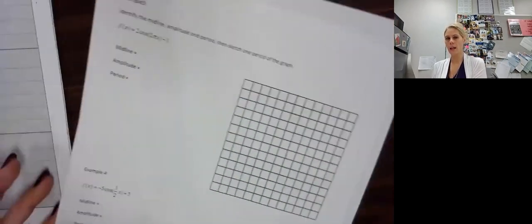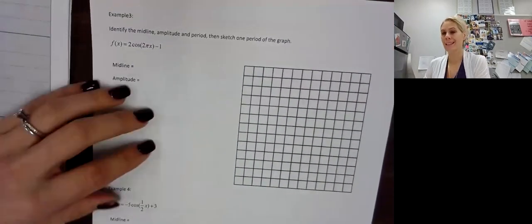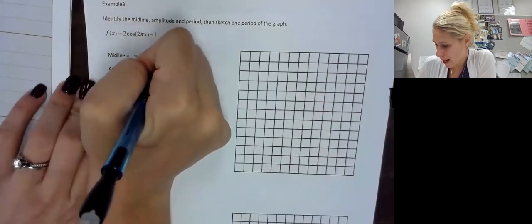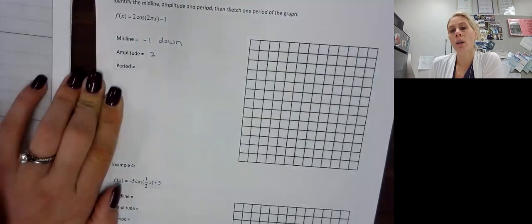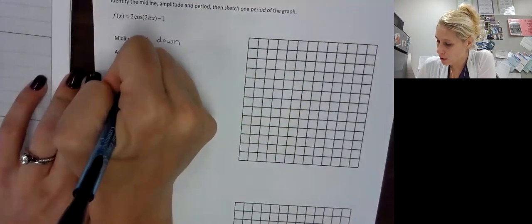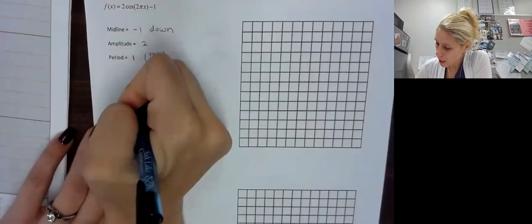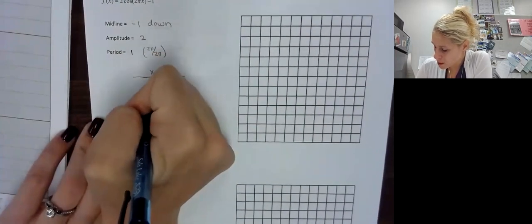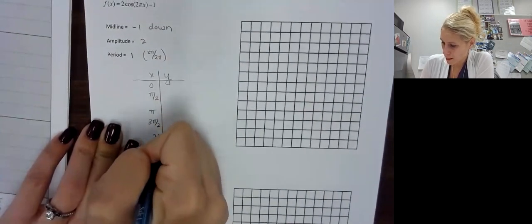Now let's look at some cosine graphs on the last page. If you go to examples 1 and 2, you'll find these are the same functions but now with cosine instead of sine. We can take our midline from example 1 — negative 1 — since we don't have to redo that math. Amplitude is 2. The period is 2 pi divided by 2 pi, which equals 1. For the parent function, the X values are still 0, pi halves, pi, 3 pi halves, and 2 pi.